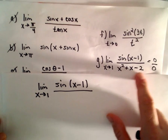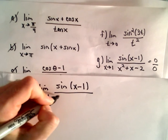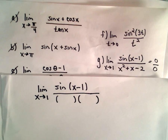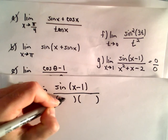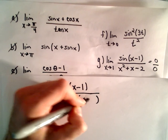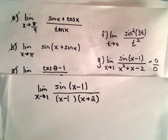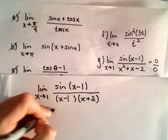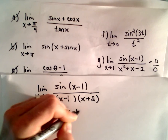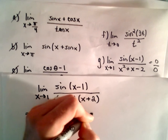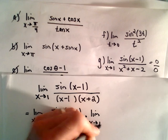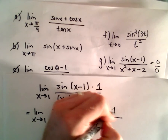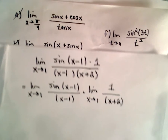Well, x squared plus x minus 2 — anytime I see a quadratic, I feel like trying to factor it, and it seems like that's often the thing that helps. x squared plus x minus 2 factors as x minus 1 times x plus 2. So I'm going to rewrite this as the limit as x approaches 1 of sine of x minus 1 over x minus 1, times the limit as x approaches 1 of 1 over x plus 2. I'm just breaking it up like in the last example.